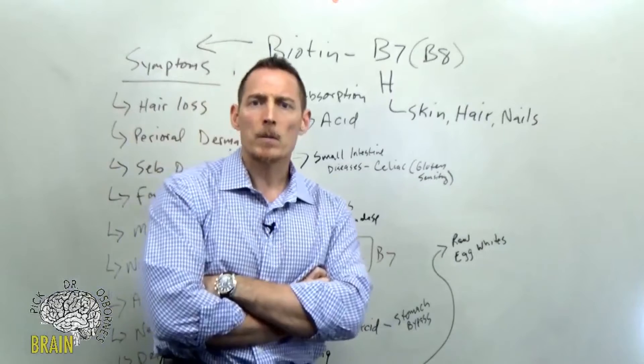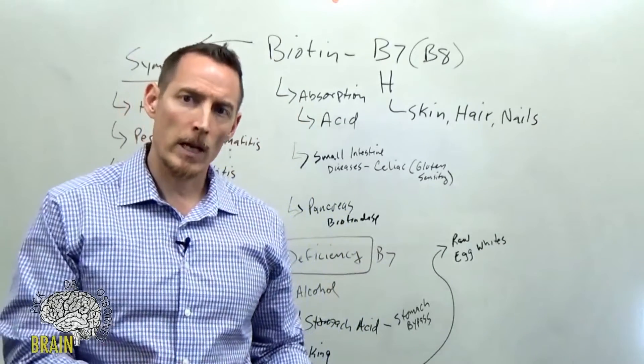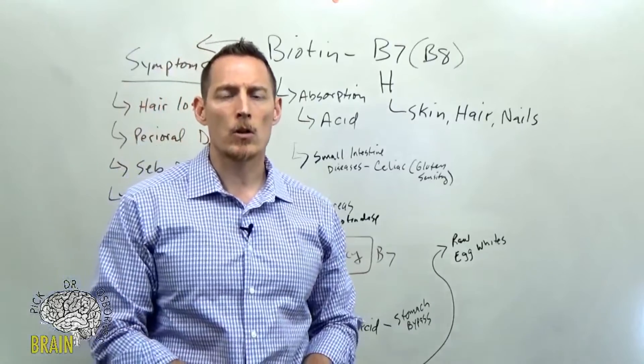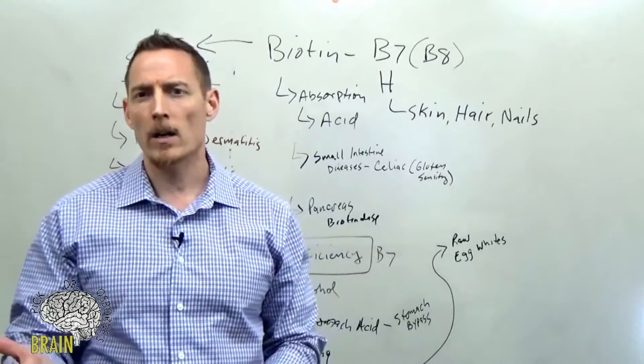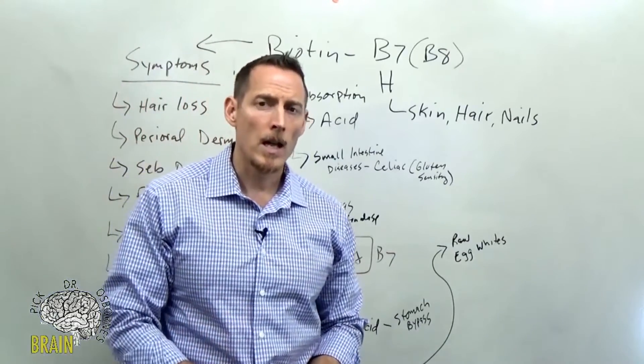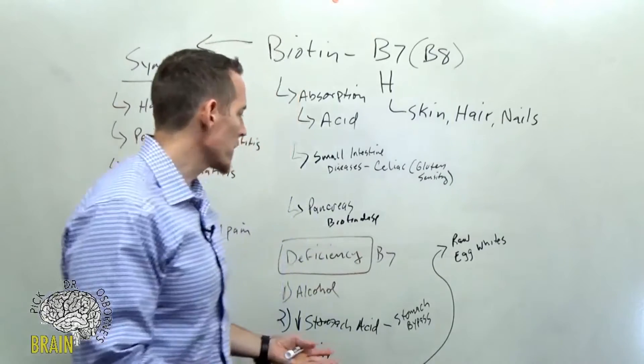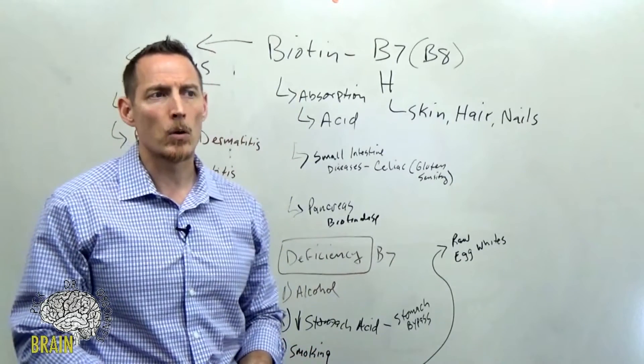So again, raw egg whites, there's also inborn errors of metabolism that can occur as a creator of biotin deficiency, but these are quite rare. And even the incidence of these is like one in 130,000 or so. So it's not a super common thing at all. And it's usually caught very, very early in infancy. So I'm not going to spend a whole lot of time talking about inborn errors of metabolism.